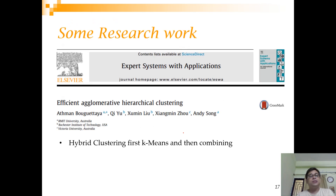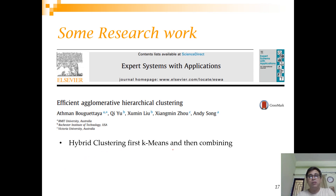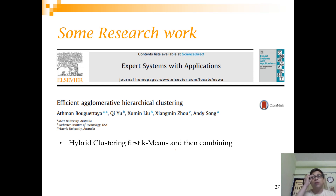A recent paper in Expert Systems with Applications — a leading artificial intelligence journal — titled 'Efficient Agglomerative Hierarchical Clustering' proposes a hybrid technique. They first cluster using k-means, which reduces the time complexity from O(n² log n) to something lower, and then apply agglomerative clustering to find which clusters are closer and merge them. This helps address the time complexity problem.